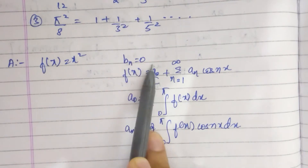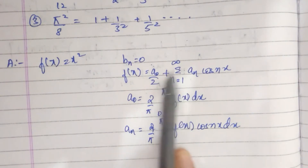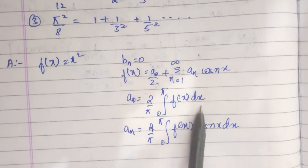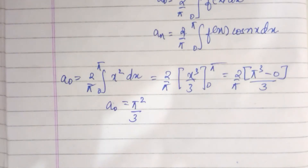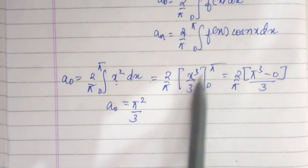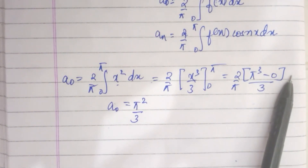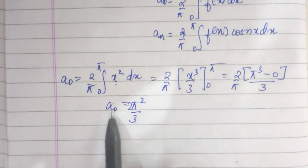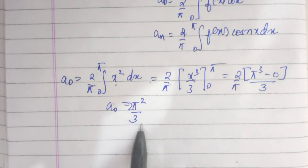f of x equals x squared is clearly an even function, so b n equals 0. The Fourier series is f of x equals a naught by 2 plus summation from n equals 1 to infinity of a n cos nx. We start evaluating: a naught equals 2 by pi times the integral from 0 to pi of x squared dx. The integration gives x cubed by 3, and on substituting the limits we get 2 pi squared by 3.